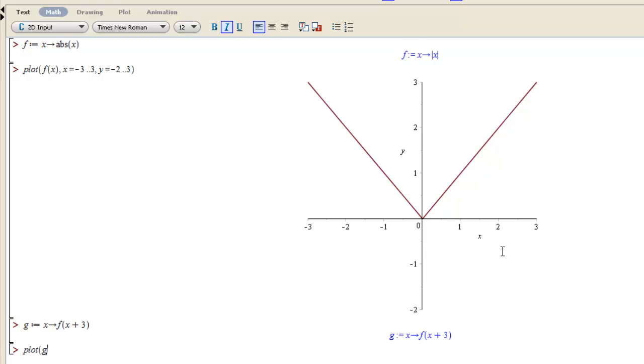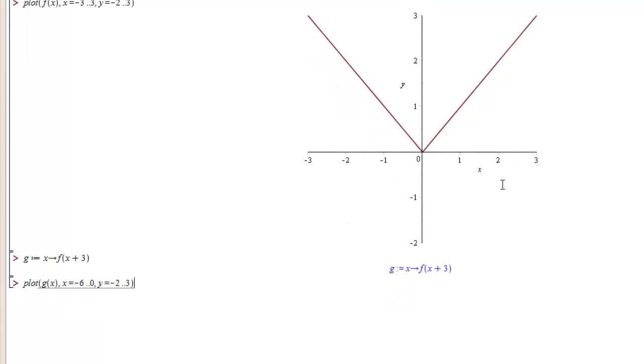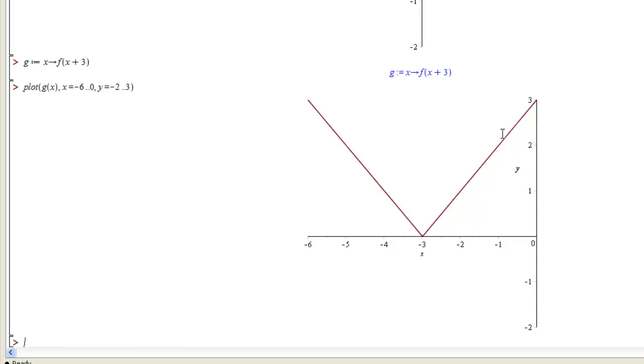So now let's plot this. We've shifted to the left, so we maybe want a little more range in the x direction. Let's go negative 6 to 0 in the x direction, and keep negative 2 to 3 in the y direction. We see we've got now the graph that's the absolute value, but shifted three places to the left because we added 3 to the function argument.